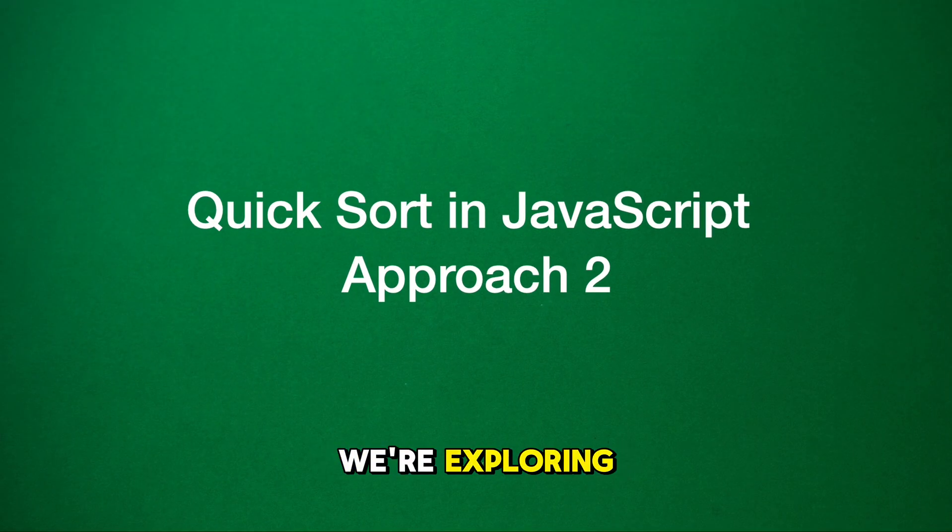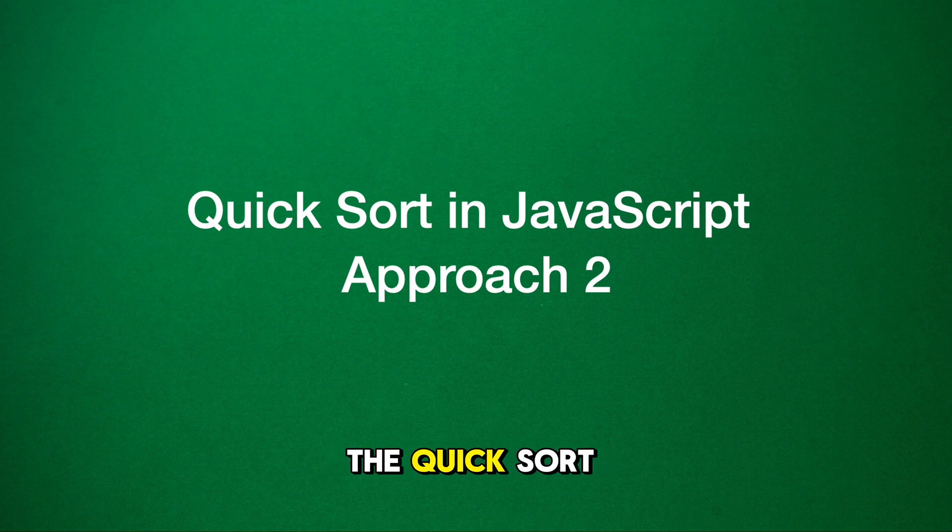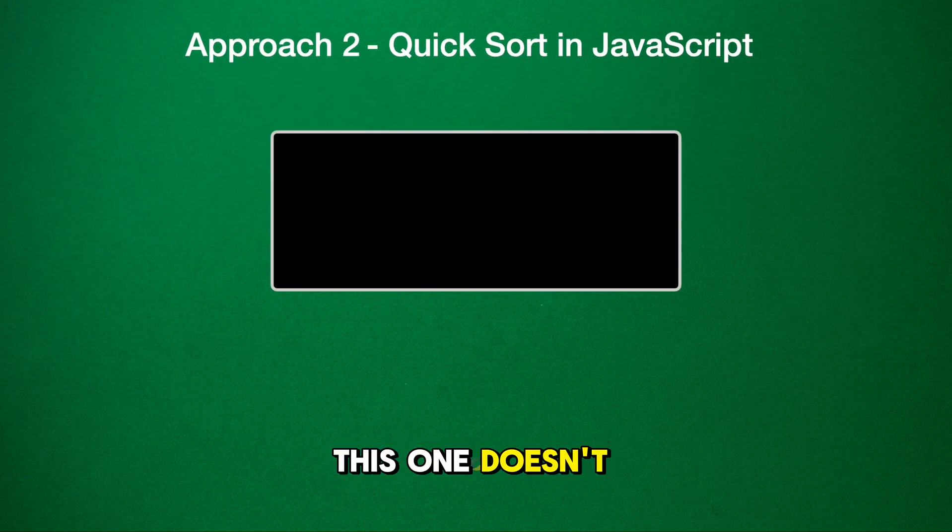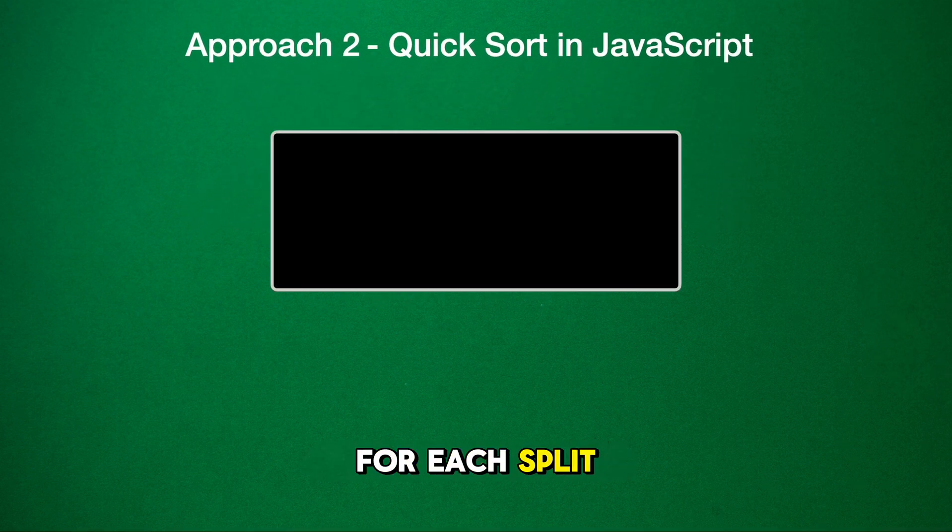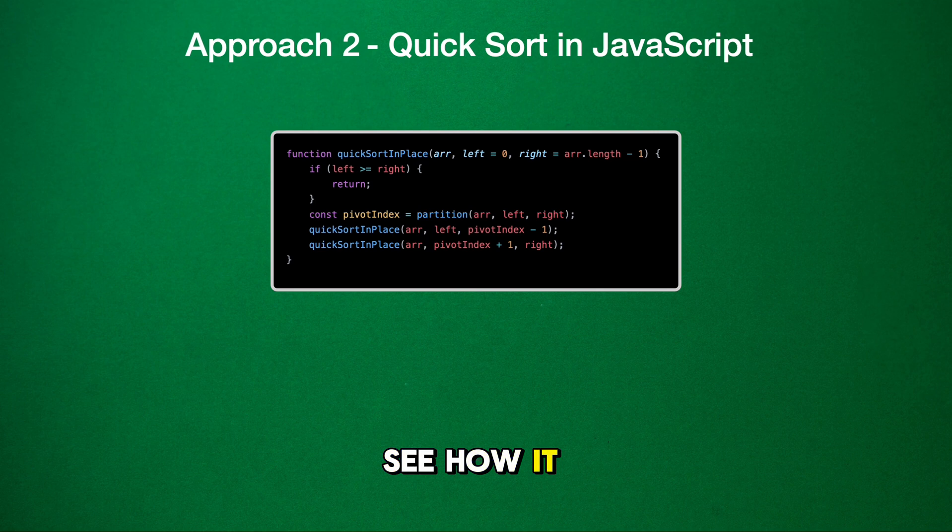The next approach we're exploring is an in-place version of the quick sort algorithm. This one doesn't create new arrays for each split. It sorts the array by rearranging the elements directly within the original array. Let's dive into the code and see how it works.